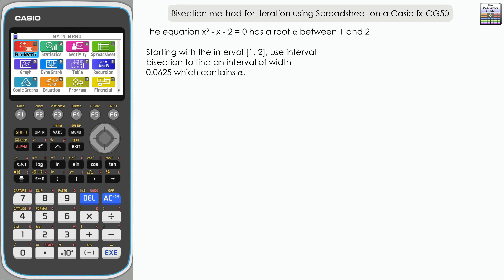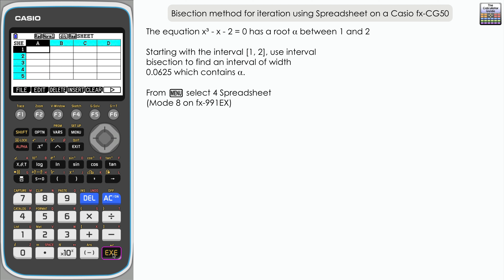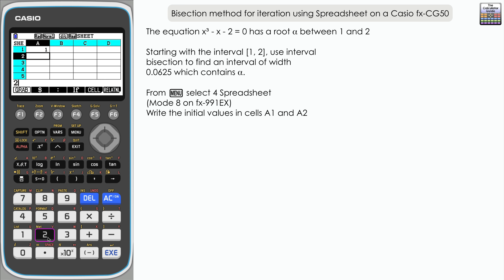Let's start off by entering the spreadsheet mode — that's option 4 here, option 8 on the ClassWiz if you're following along with that. We're going to populate columns A and B. We'll start by putting the starting values in cells A1 and A2 — in this case 1 and 2. We're also going to be writing figures into cells 3, 4, 5, and 6.